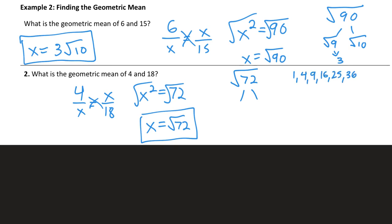So if you really think about it, a perfect square that fits into 72 is 36 two times.